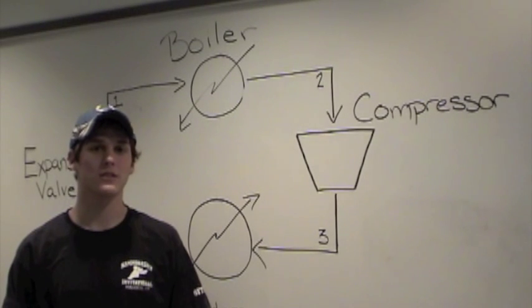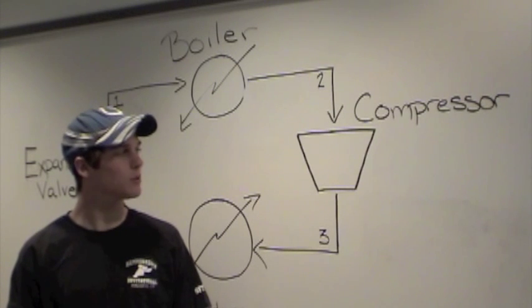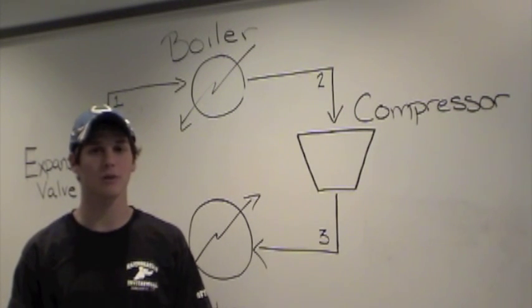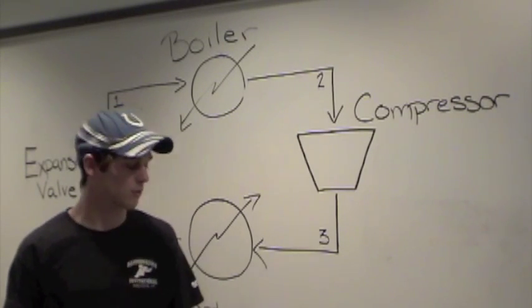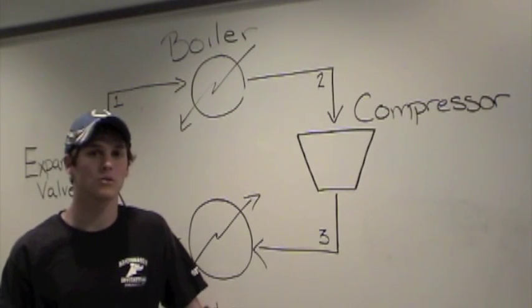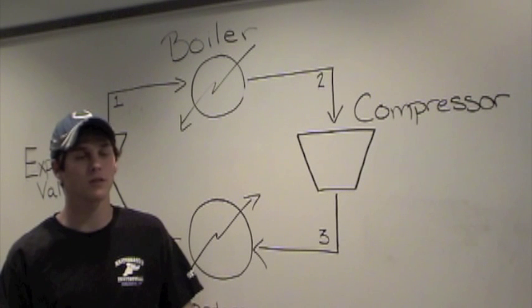Another way to increase the efficiency is to decrease the work put into the compressor to compress the fluid. This can be done by decreasing the exit pressure from the compressor. If you do this, you can't transfer as much heat out of the refrigerator, and so you can't cool it to as low of a temperature. But if you increase the insulation, as Brian talked about before, then you're not getting as much heat flowing into your refrigerator.